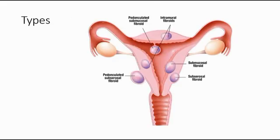This picture shows the types of uterine fibroid. There is the intramural fibroid, submucosal fibroid, subserosa fibroid, pedunculated fibroid, and also cervical fibroid, which is not shown in this picture.